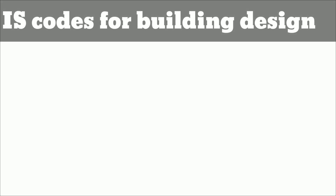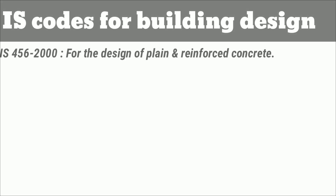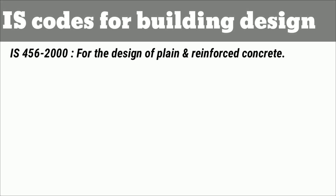IS 456 is the most important IS code for civil engineers. IS 456-2000 is the code of practice for design of plain and reinforced concrete for designing any concrete structure. It gives specifications for the reinforcement of various materials used in making concrete, and classifies concrete into various grades based on 28-day concrete cube strength.